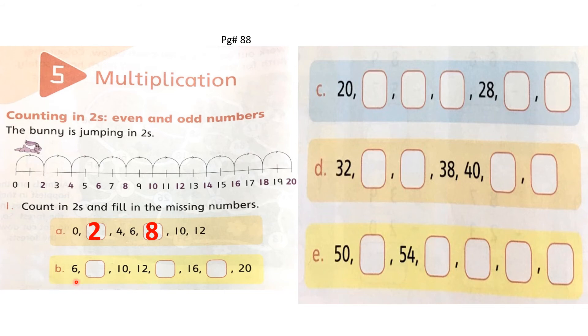Start jumping again from number 6. Where it will go? Yes, at number 8. So, right answer here, 8. Start jumping again. Then bunny will go at number 10, then 12. Next, yes, 14. So right answer 14 here. Start jumping again from 14. Where it will go? 16, then 18. Right answer 18 here. 20 number is already written here.